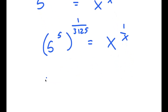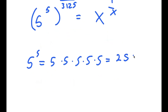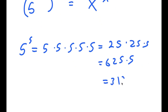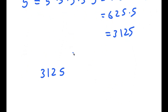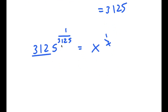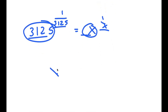Now, 5 to the power of 5 is equal to 5 × 5 × 5 × 5 × 5, which is 25 × 25 × 5, which is 625 × 5, which equals 3125. So I get 3125 to the power of 1 over 3125 is equal to x to the power of 1 over x. And now because these two have the same form, this means these two numbers are equal to each other.